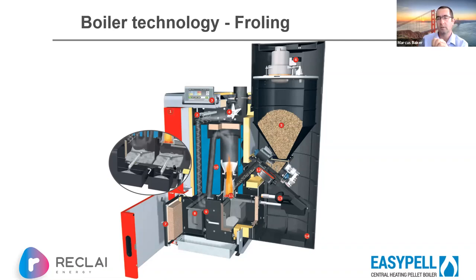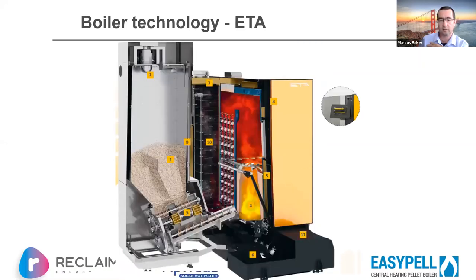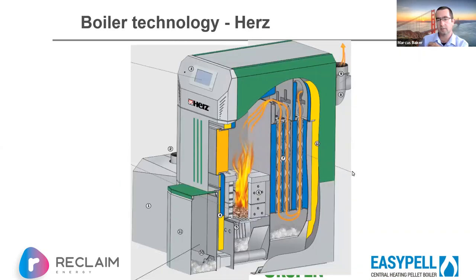Froling is relatively similar to Ökofen in some ways, but they have quite a different pellet feed mechanism and a closed grate, which potentially has some maintenance issues. Etta, another Austrian manufacturer, has opted for a side-fed grate and heat exchanging on the side — it tends to be a bigger boiler.